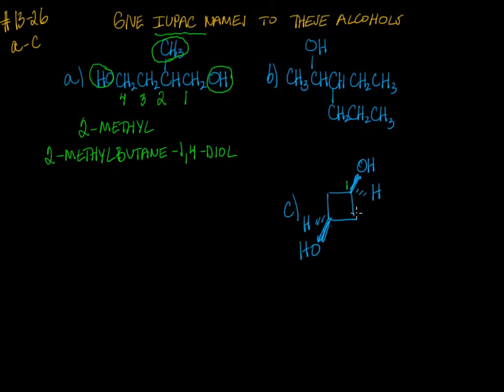So let's go ahead and number the ring. It doesn't matter if we number clockwise or counterclockwise. We have two hydroxyl groups so this is going to be a diol as well, but you'll notice that the two hydroxyl groups are both on a wedge coming up towards us, so we use the prefix cis and this is cyclobutane for rings.